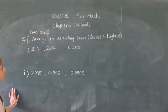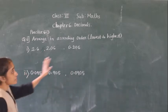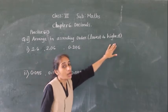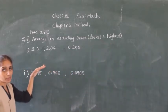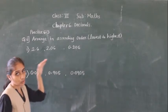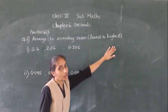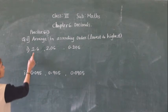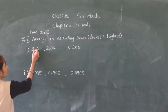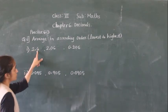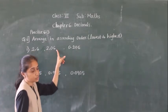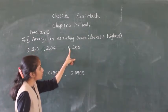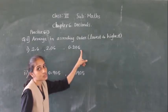Question number 6: arrange in ascending order, which means small to big, lowest to highest. The numbers given are 2.6, 2.06, and 0.206.